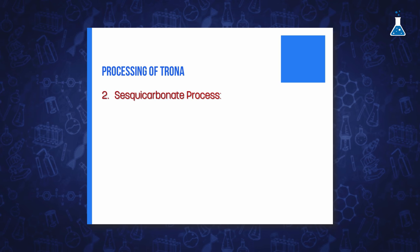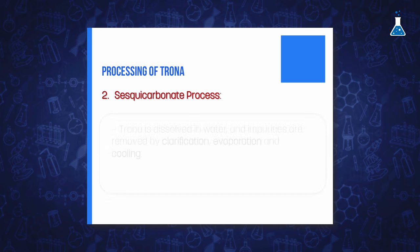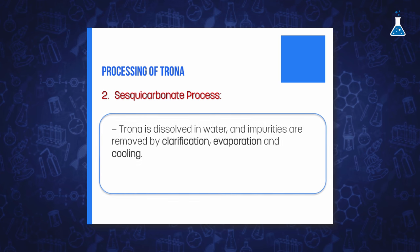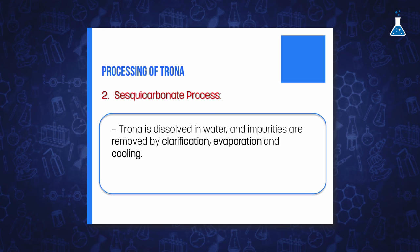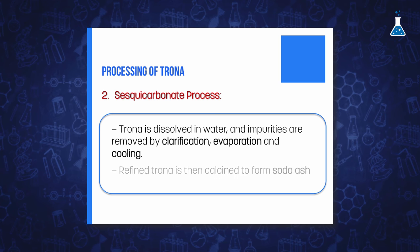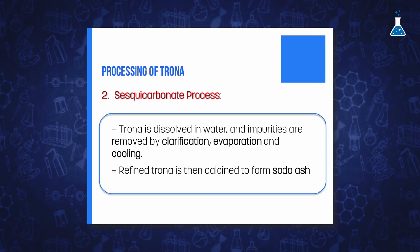The other process is known as the sesquicarbonate process, which consists of dissolving trona in water to remove impurities by clarification, evaporation, and cooling. The refined trona is then calcined to form soda ash.